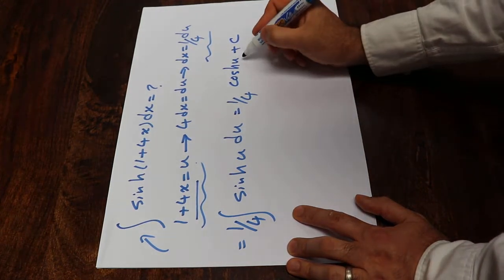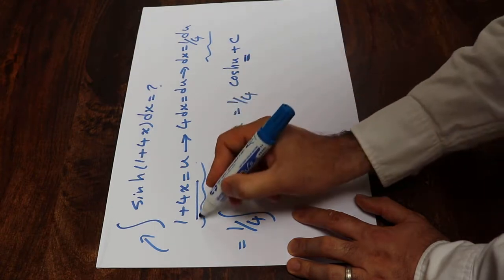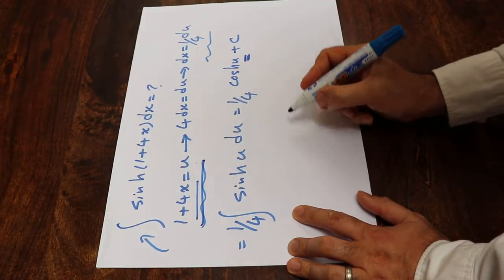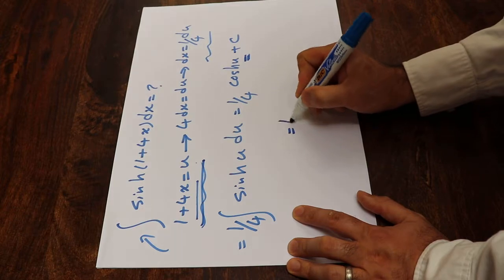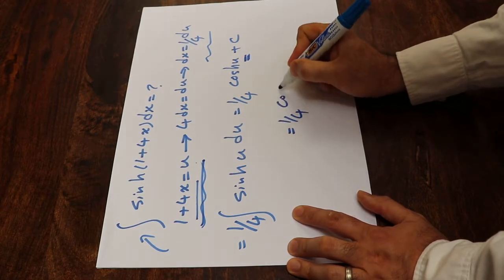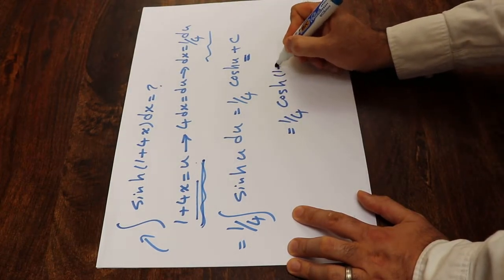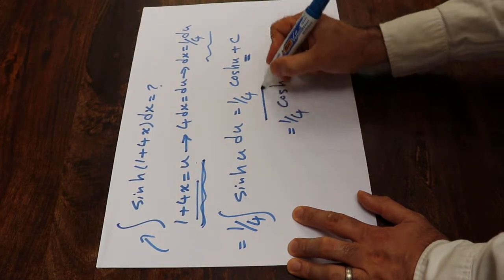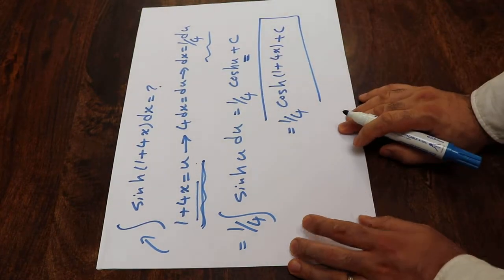Here all you need to do is substitute this parameter u with the definition of u, which is 1 plus 4x. Therefore, this will be equal to 1 divided by 4, hyperbolic cosine 1 plus 4x plus c. That's the solution to this integral.